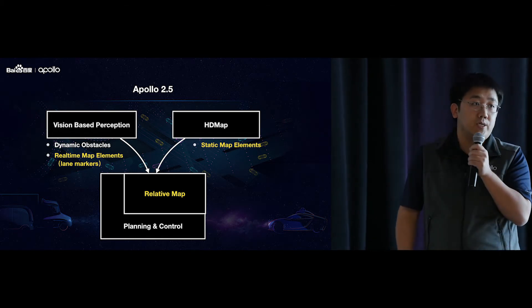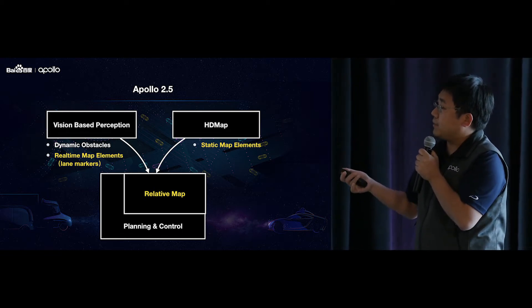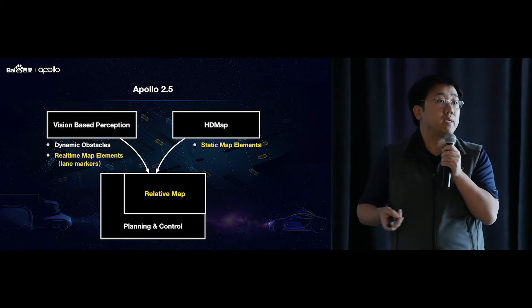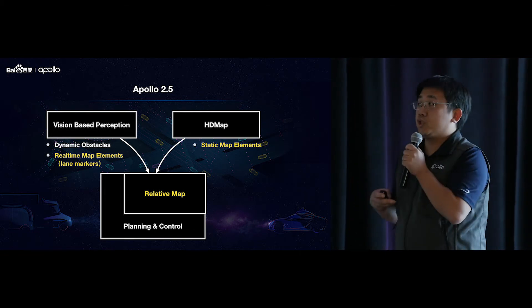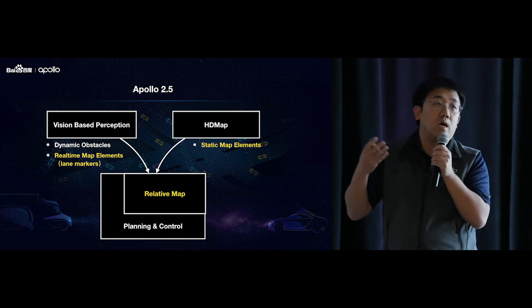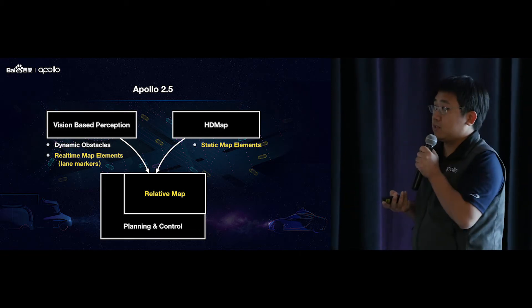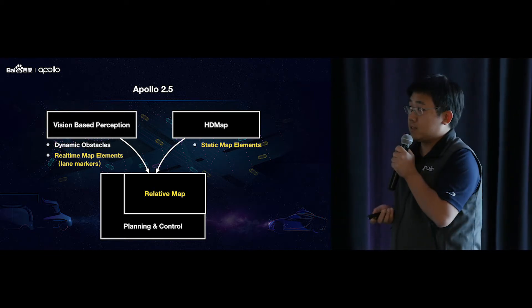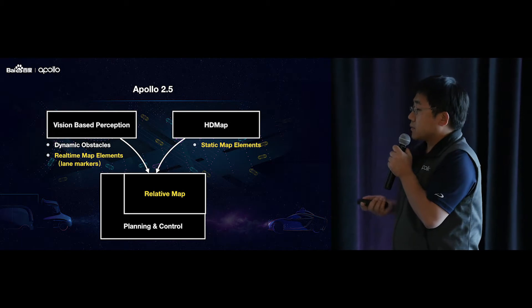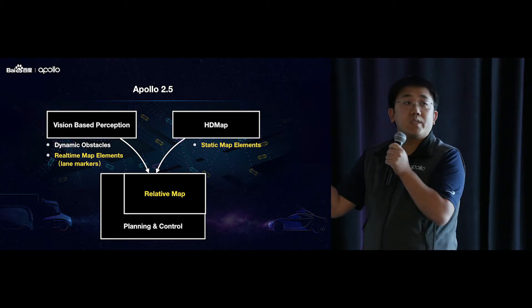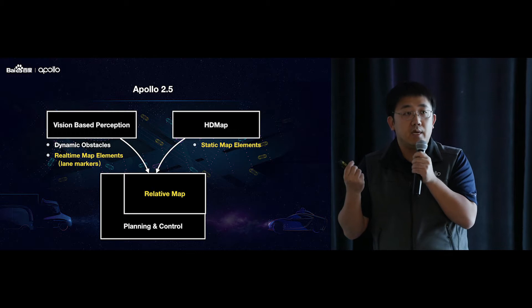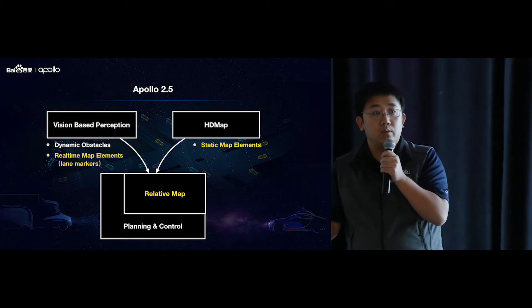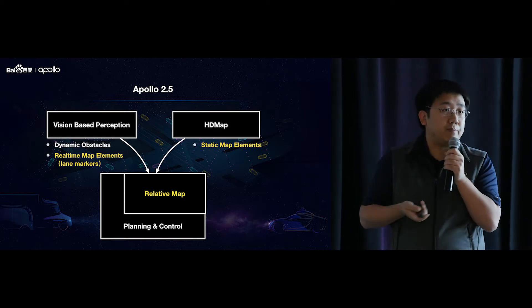For example, lane markers. Compared with the static map elements from the HD map, the real-time map elements are computed online, and their coordinates are in vehicle coordinate frame. This means the elements don't require any localization information. In order to combine these two types of map elements together and provide a uniform map interface to planning and control, we developed the relative map component.